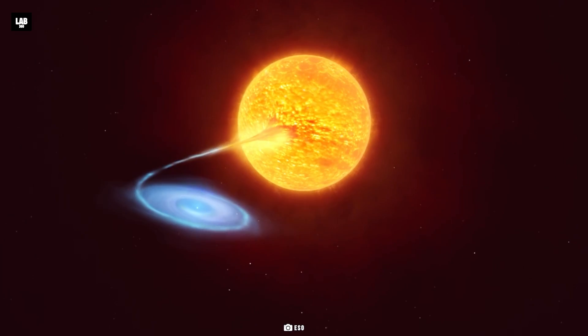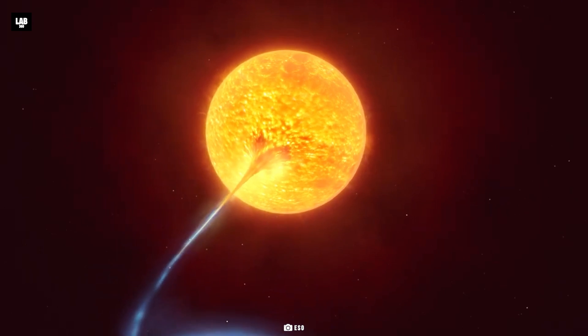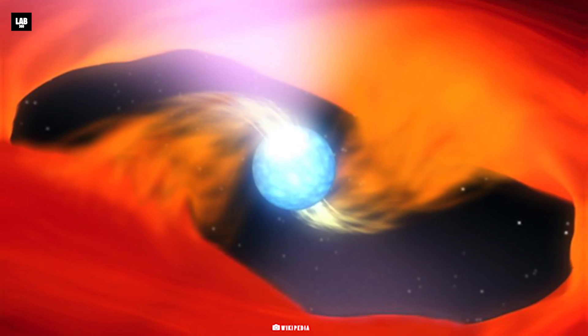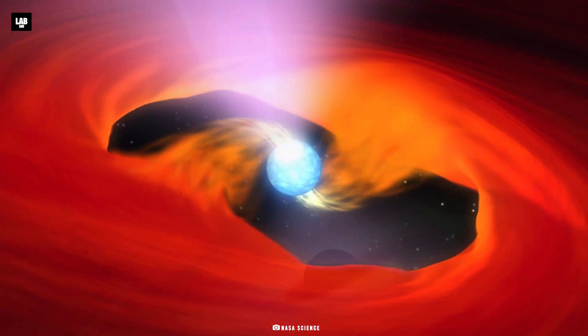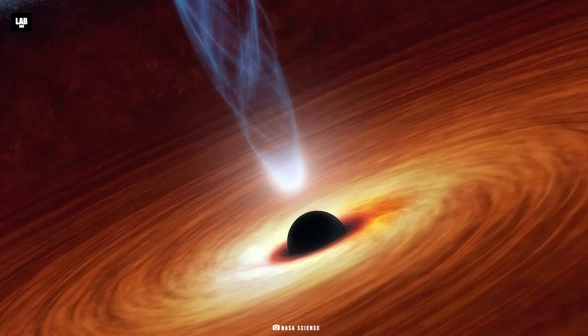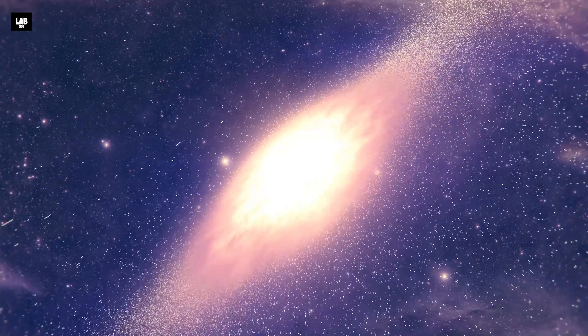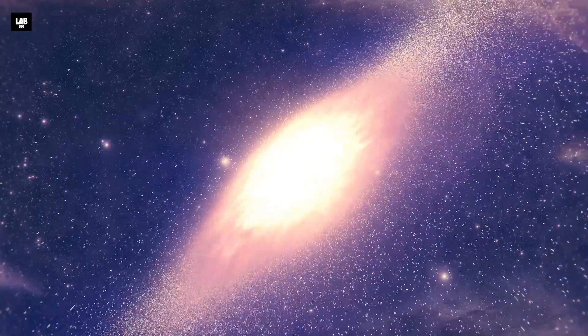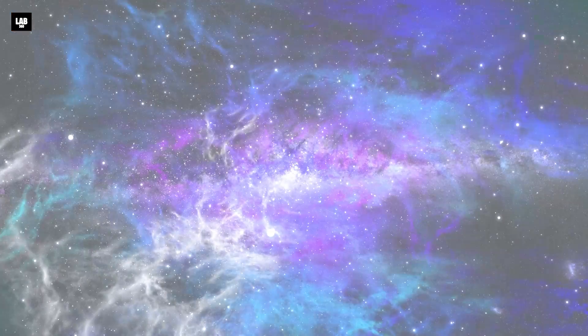The second way in which a supernova can occur is when a white dwarf accumulates enough mass from its binary companion. The end result of a supernova explosion is either a neutron star or a black hole, both exotic objects. A supernova can be as bright as an entire galaxy at its peak and will fade over months. Indeed, a supernova is a rare and fantastic phenomenon.